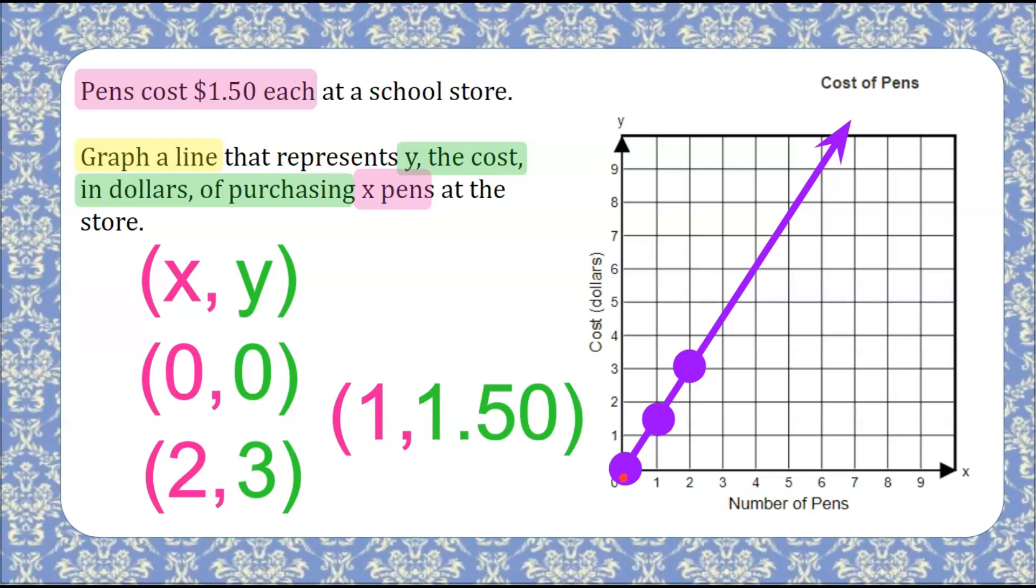And I can see that if I spend $1.50, one pen. And each time I add another $1.50, I get another pen. So I can see that if I spend $6 in the school store, I purchased four pens.